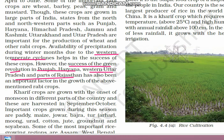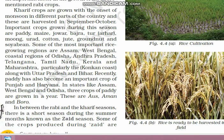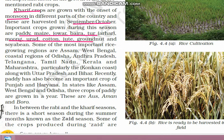Kharif crops are grown in the monsoon season with the onset of monsoon in different parts of the country and are harvested in September and October. Important Kharif season crops are paddy, maize, jowar, bajra, tur, moong, urad, cotton, jute, groundnuts, and soybean. These are the important Kharif crops, and the regions where they are grown will be seen through a map.